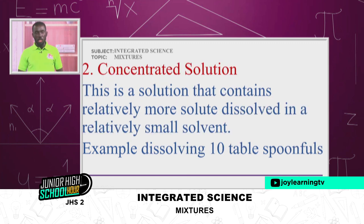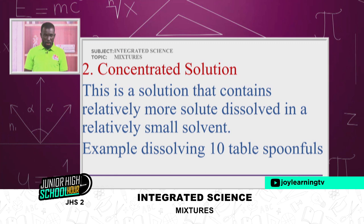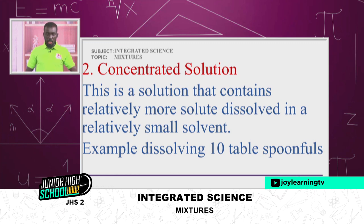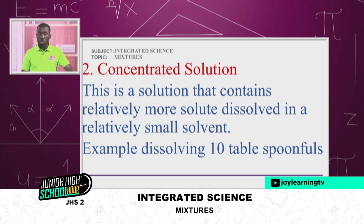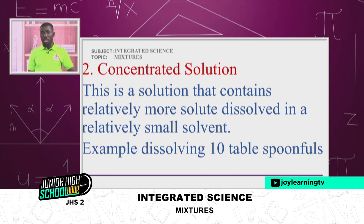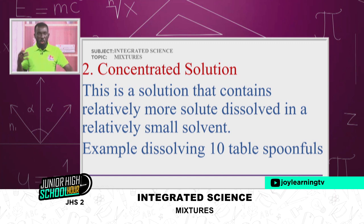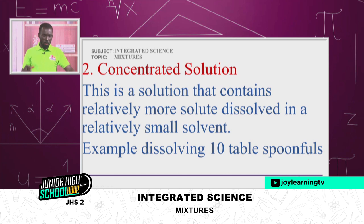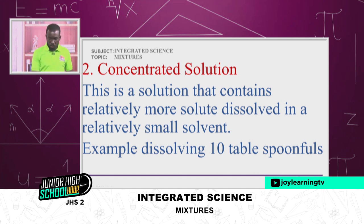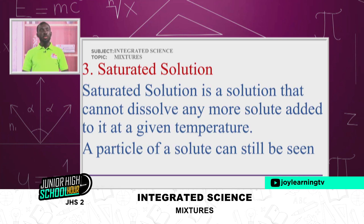Now we go to concentrated solution. If you want to taste sugar, it means the amount of sugar in whatever you are tasting is higher. This is a solution that contains relatively more solute dissolved in a relatively small amount of solvent. Like when you go buy cocoa porridge and you tell the woman to give you three tablespoons of sugar — the sugar content will be so much concentrated. Example: dissolving 10 tablespoonfuls of sugar in 100 cm³ of water.